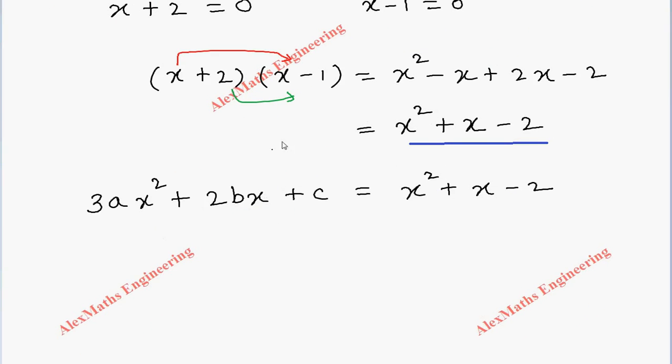Now comparing the coefficients of x² on both the sides, we get 3a equal to 1, so a equal to 1/3. In the same way, comparing the coefficient of x on both the sides, we get 2b equal to 1, so b equal to 1/2. In the same way, comparing the constants on both sides, we get the value of c which is minus 2.